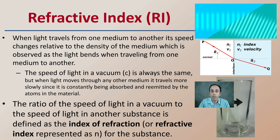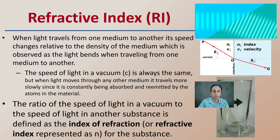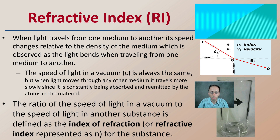The speed of light in a vacuum is represented by the letter c and is always the same, but when light moves from one medium to another it travels more slowly as it's constantly being absorbed and re-emitted by the atoms in that material.